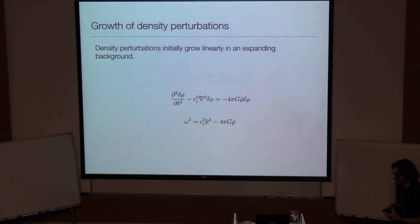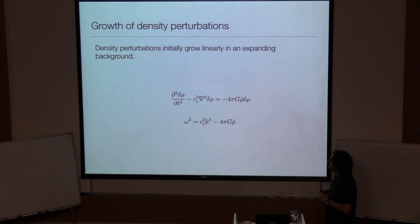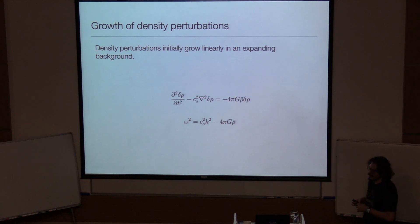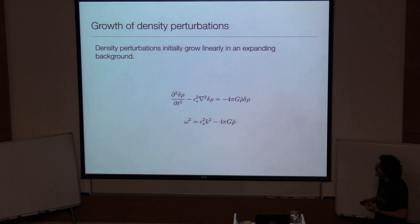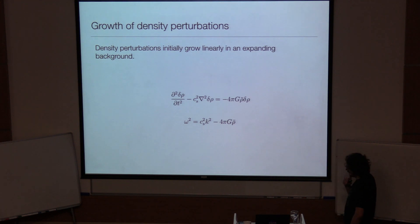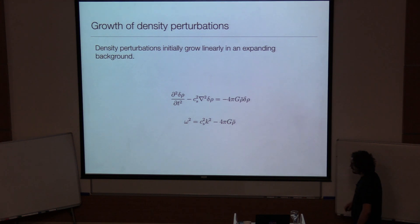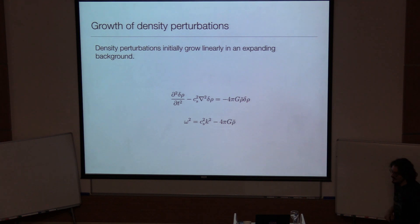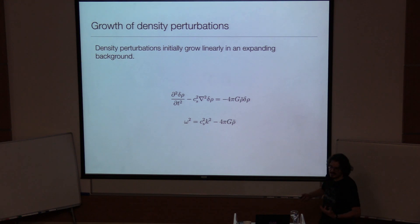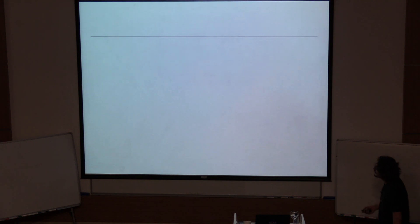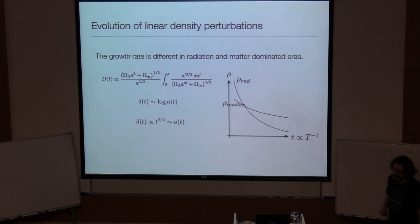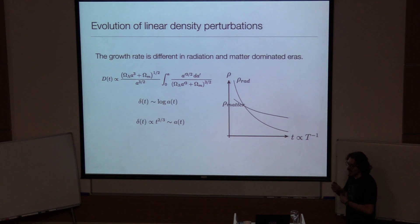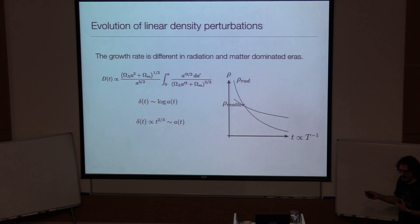Now we have these density fluctuations. I've talked about the initial conditions and how they come into existence. Another thing to think about is how they grow. In the linear regime, they grow through a differential equation with a second-order time derivative and second-order spatial derivative, coupled by the speed of sound, with a source term due to the density fluctuation itself. If you put in the dispersion relation, you get the growth factor D(t), which characterizes how a given density fluctuation grows as a function of cosmic time.